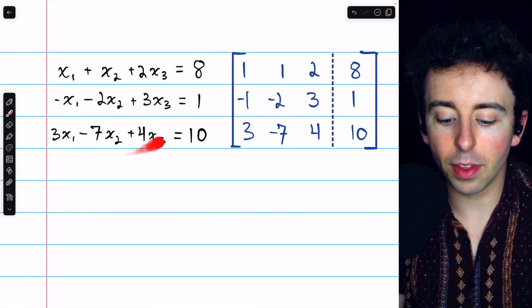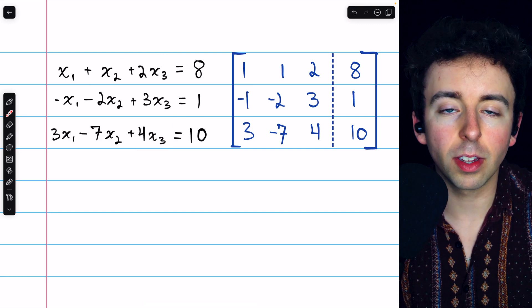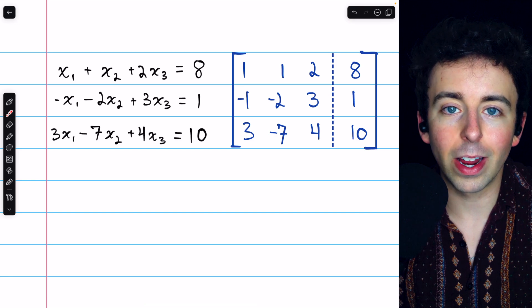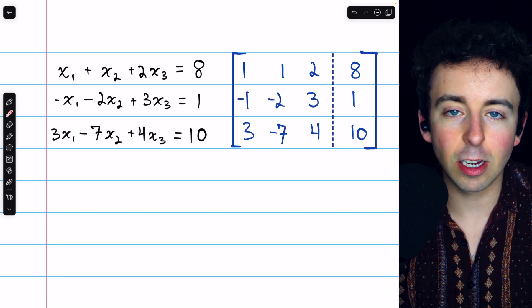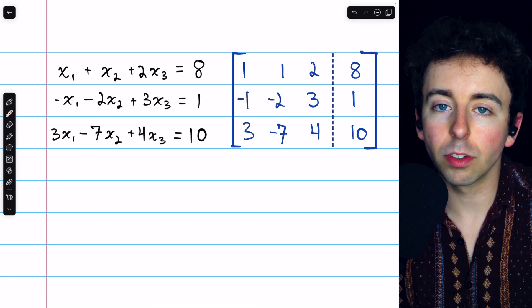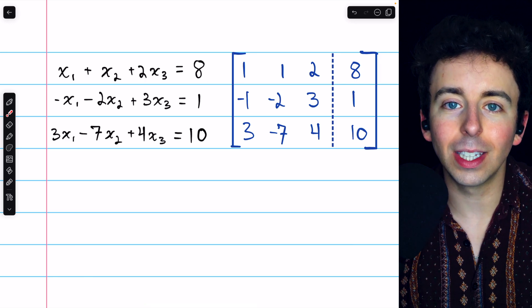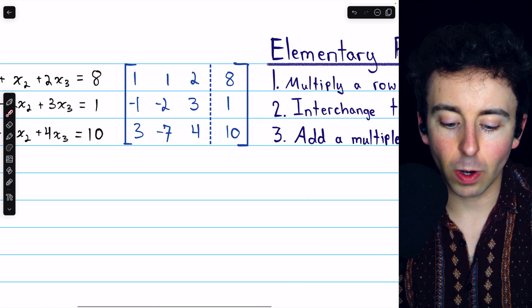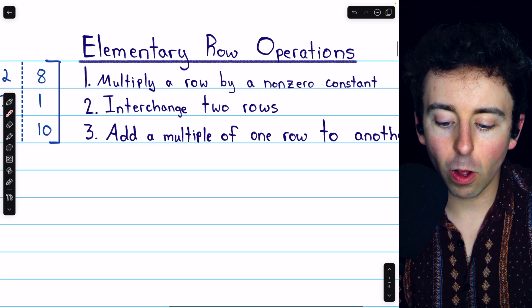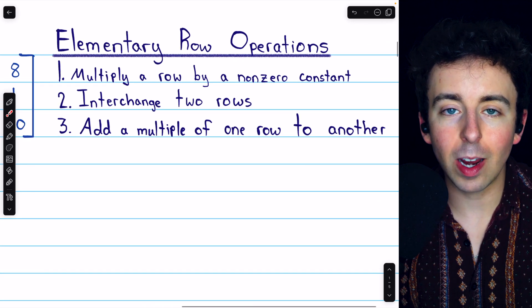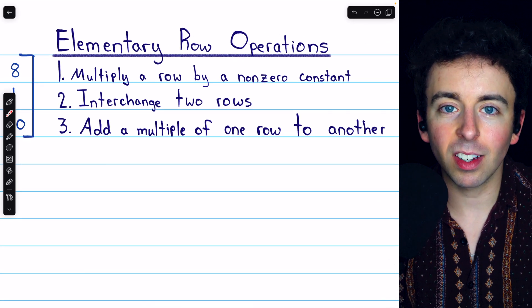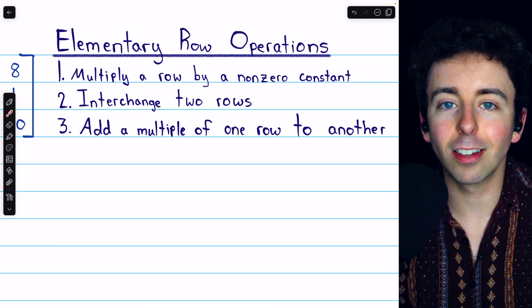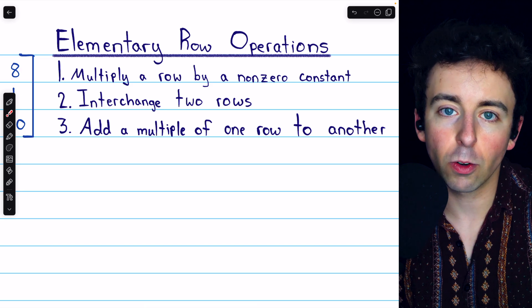Now, if we were trying to solve this system of equations just using the equations, there are various things we could do, like multiply an equation by a constant that's not 0, or add multiples of one equation to another to try to eliminate a variable. These are all things we can also do with the matrix, and these actions are called elementary row operations. They will change the matrix into a form that we prefer, but they certainly don't change the solution to the system that the matrix represents.